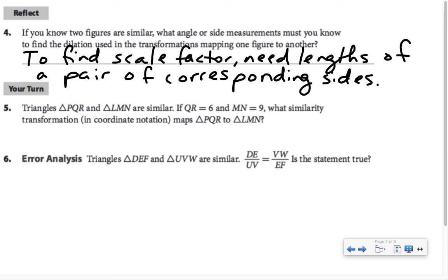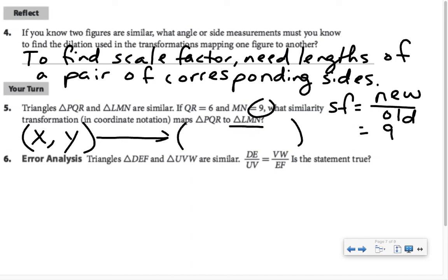In this Your Turn, we're told that triangles PQR and LMN are similar. If QR equals 6 and MN is 9, what similarity transformation maps PQR to LMN? So if these figures were in the coordinate plane, what would I have to do so that PQR maps to LMN? Remember that scale factor is new over old, and in this figure, the LMN is the new, so that corresponds to the 9 over 6, and that reduces to 3 halves. The coordinate notation for the transformation I would need is 3 halves X, 3 halves Y.